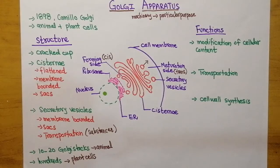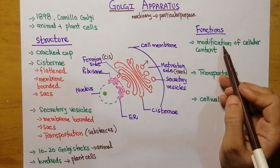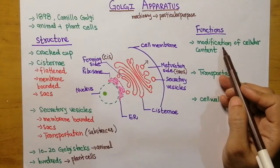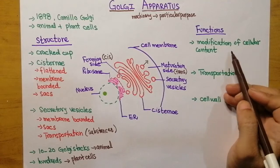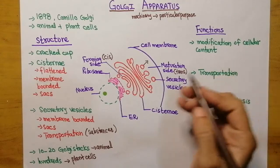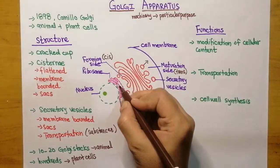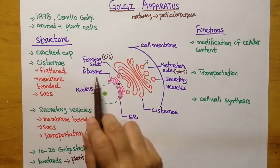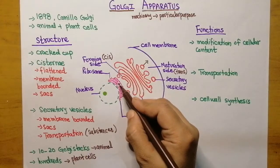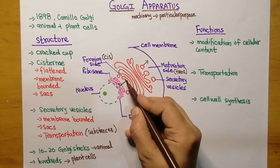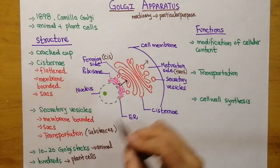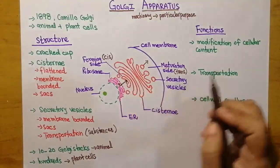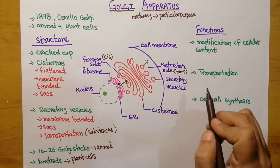Let's talk about the functions of the Golgi apparatus. The first function is the modification of cellular content. For example, if a protein is produced inside the endoplasmic reticulum by the help of ribosomes, this protein is sent to the Golgi apparatus, where it is going to be modified.